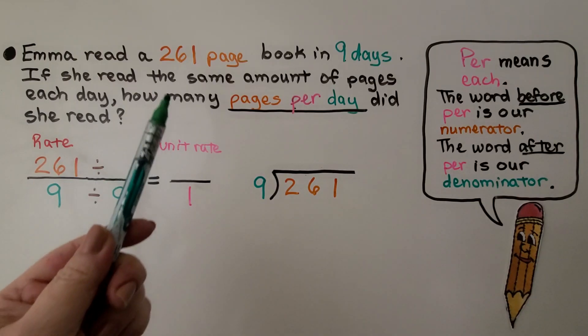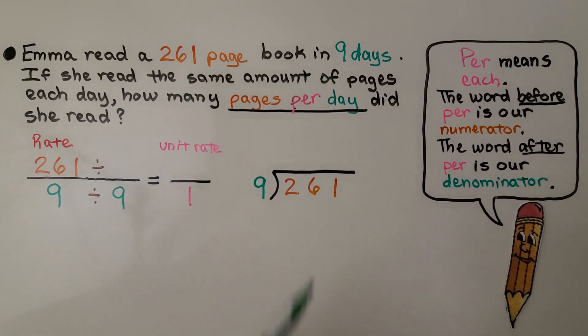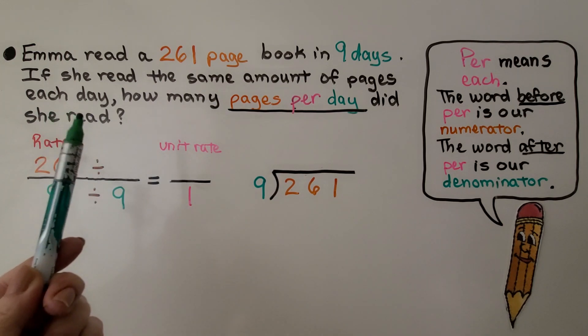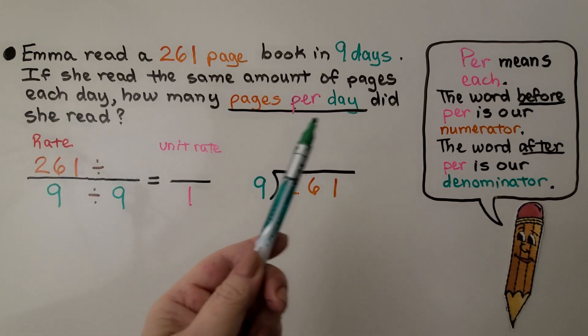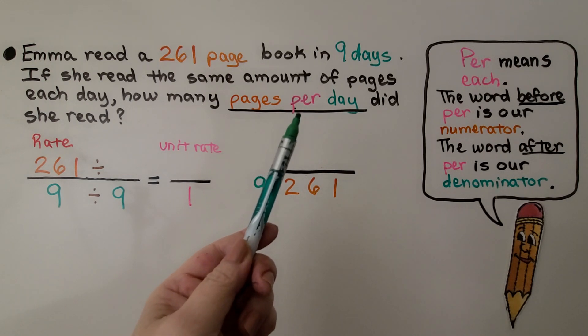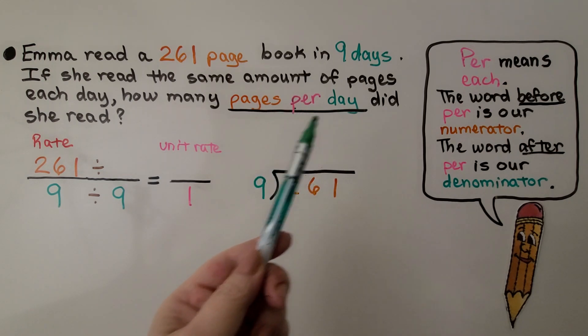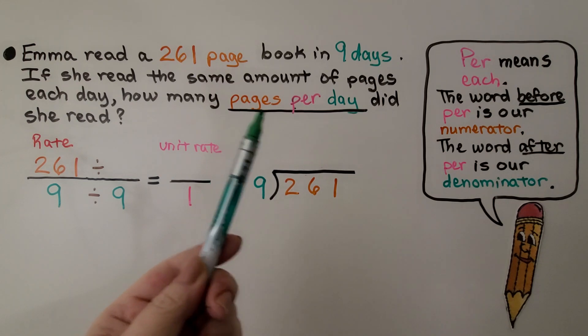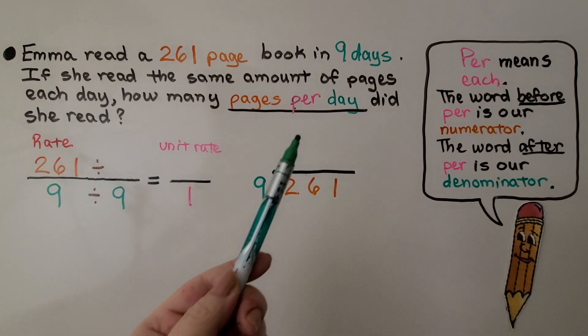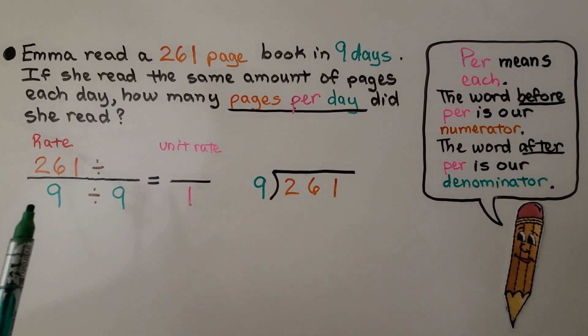Emma read a 261 page book in nine days. If she read the same amount of pages each day, how many pages per day did she read? Remember, per means each. The word before per, pages, is going to be our numerator. And the word after per is going to be our denominator. That's the nine. So we have 261 over nine.